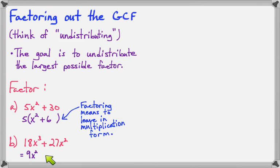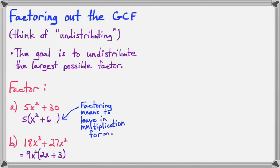Inside the parentheses I'll need two terms. 9 times something has to make 18, so that will be 2. And x squared times something has to make x to the third, so that will be x. For my second term, 9 times something has to make 27, so that will be 3. And x squared times something has to be x squared, so that would be 1 — but no need to write times 1. So check it out: 9x squared times 2x gives 18x to the third, and 9x squared times 3 gives 27x squared. Look at 2x plus 3 — they don't share any factors, don't both have an x, can't both be divided by 2 or 3. That's how we know we've factored correctly.